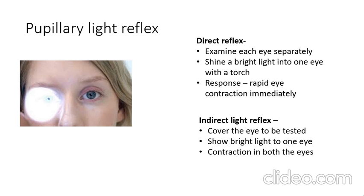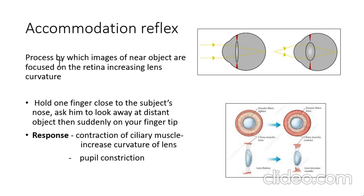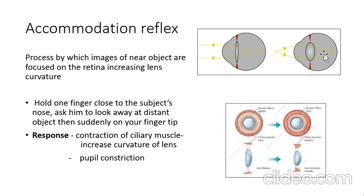The accommodation reflex is the process by which images of near objects are focused on the retina by increasing lens curvature. Hold one finger close to the subject's nose; ask the subject to look at a distant object, then suddenly look at your fingertip. The response is contraction of the ciliary muscle, increased curvature of the lens, and pupil constriction.